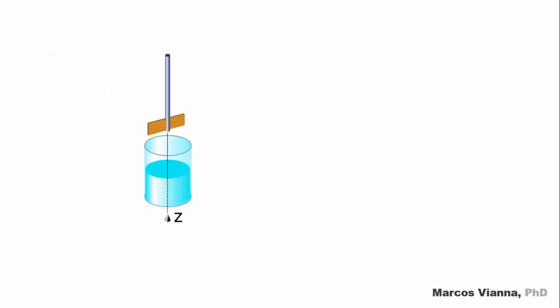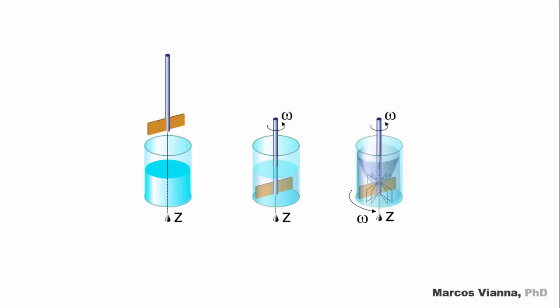See what will happen when we put an impeller inside a cylinder filled with water. When it rotates, the water inside the cylinder will form a paraboloid. We have talked about this in a previous video.